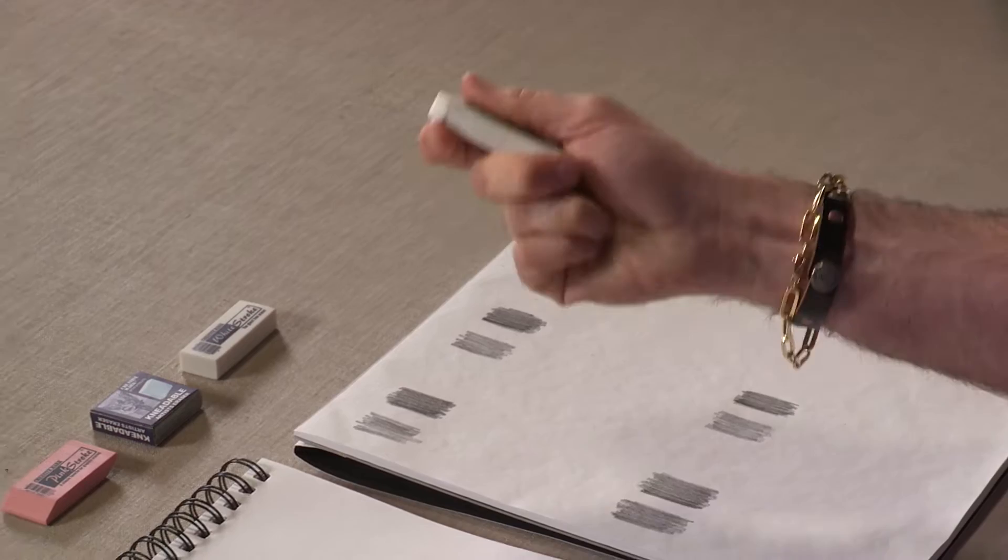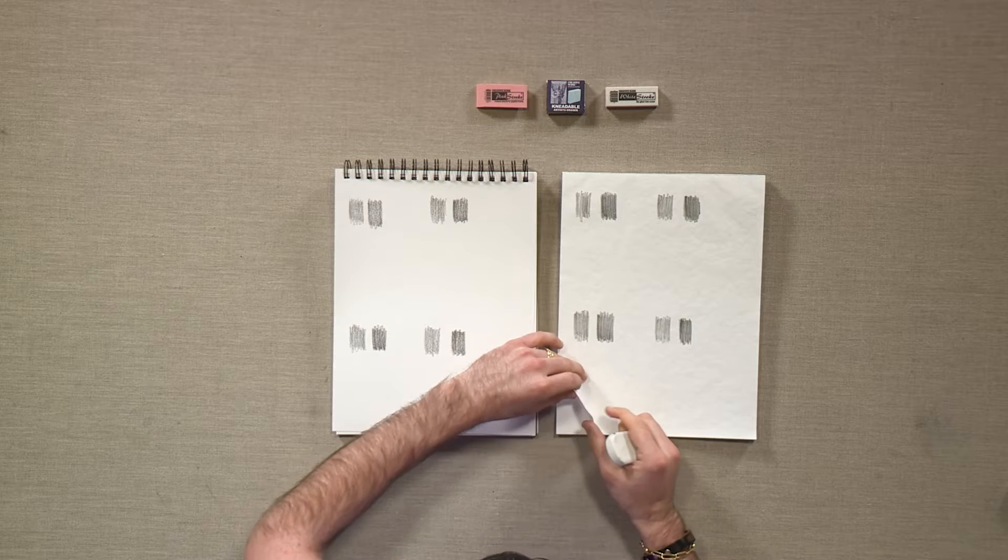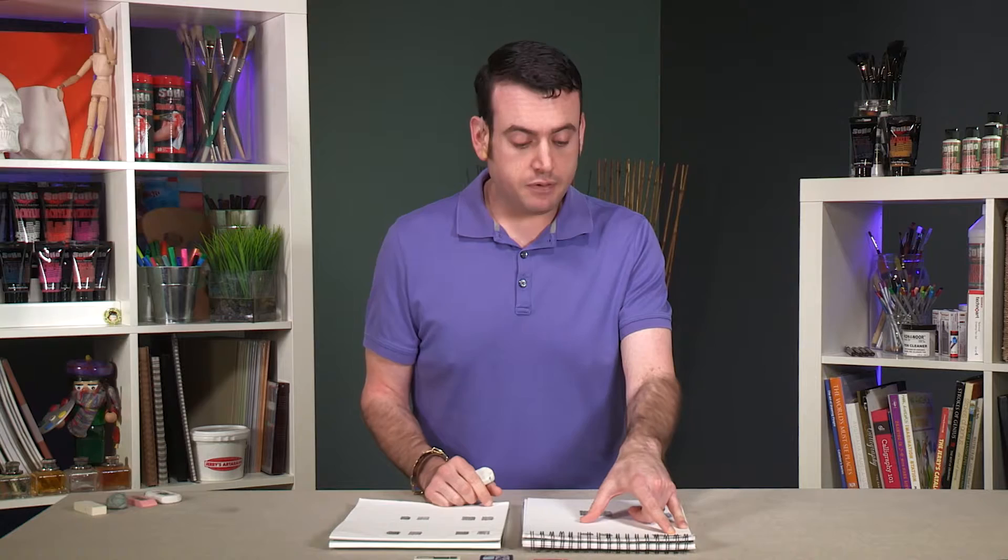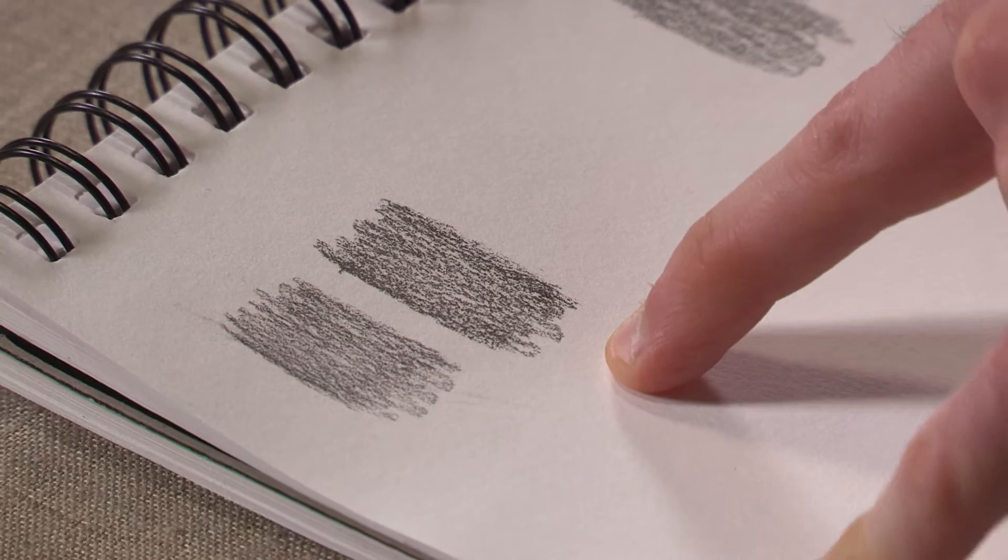What I have here are two different types of paper. I've got a multimedia paper, a 90 pound multimedia paper, and then a 30 pound layout paper. And I've put down an HB, which is a hard pencil lead, and an 8B, which is a very soft pencil lead.